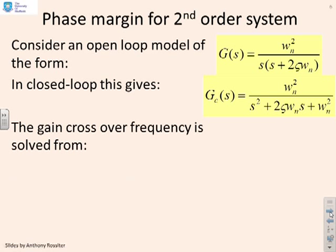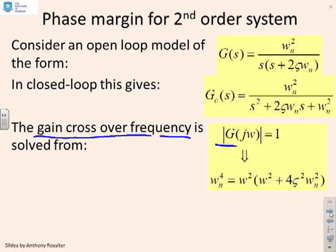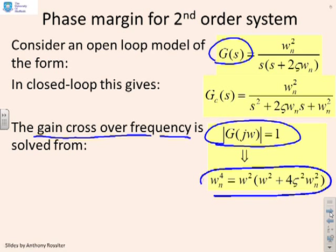To find the phase margin, we need the gain crossover frequency, solved by writing the modulus of G equals 1. If I solve that, I end up with this formula here—a bit messy but explicit.